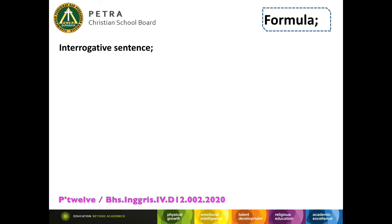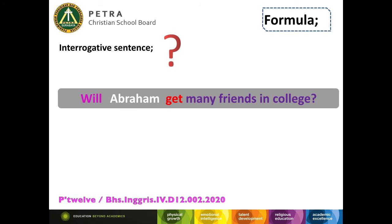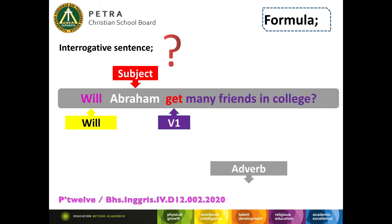Third, interrogative sentence. Here are the examples. Will Abraham get many friends in college? 'Will' is the modal. Then it is followed by the subject, verb one, and adverb.